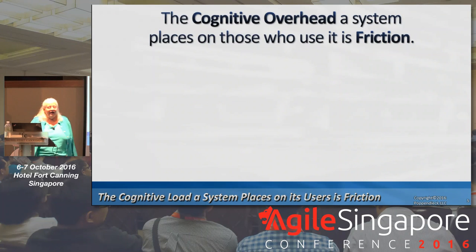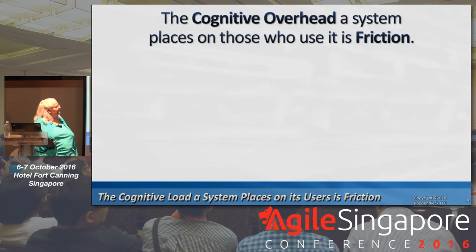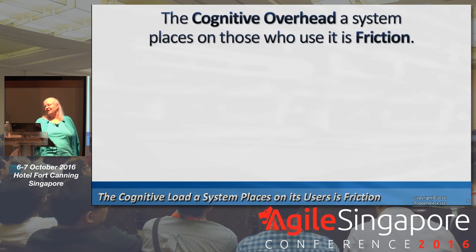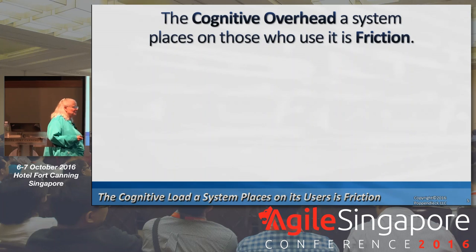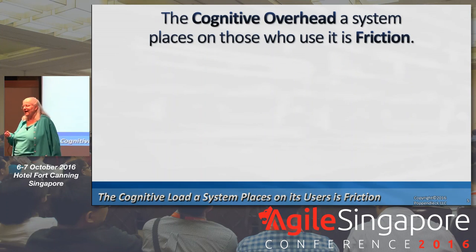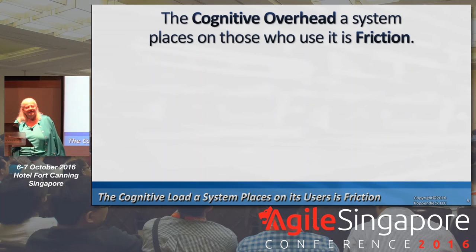The first friction is the cognitive overhead that a system places on the people who use it. Any designer would understand this. If the system makes users think, that's friction. If they can make all the decisions with System 1, then it is fast and easy. If they have to think, it is slow.